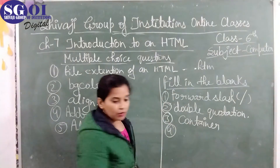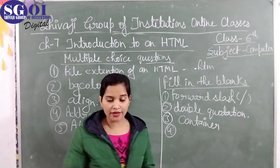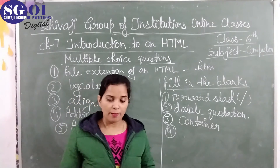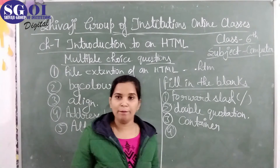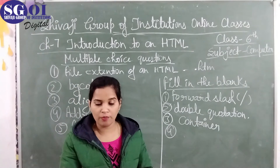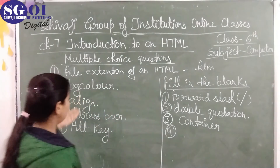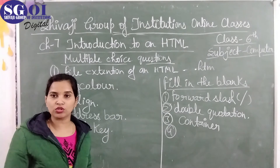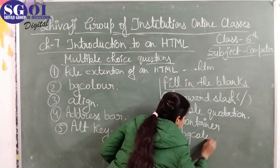Fourth fill-in-the-blank: the bgcolor attribute of the body tag is used to specify the background color of our webpage. The bgcolor attribute is in the body tag and is used to give the background color to the webpage. That is the bgcolor attribute.